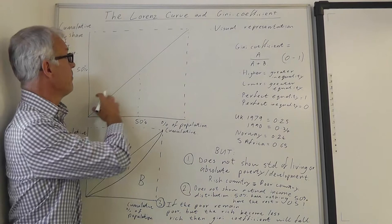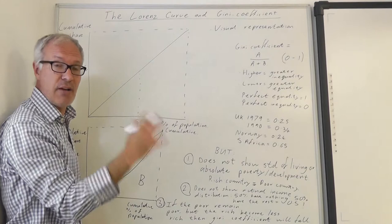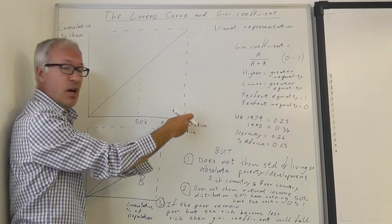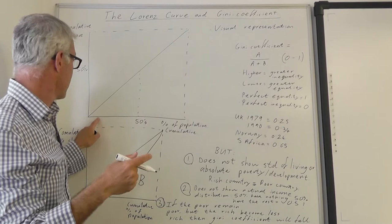If we distribute income absolutely evenly, so everyone has the same income, we'll be on this 45 degree line here. This line represents perfect equality because, say we have 100 people in the population, the first person earns £1.